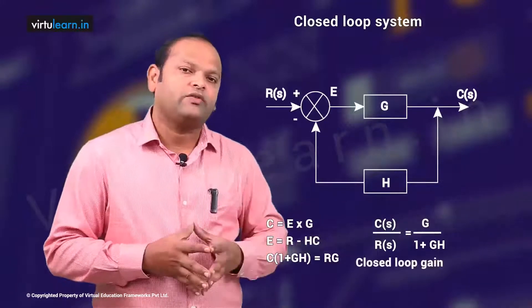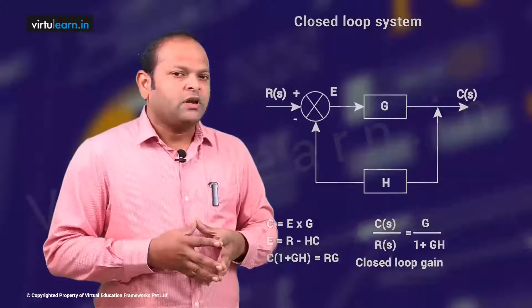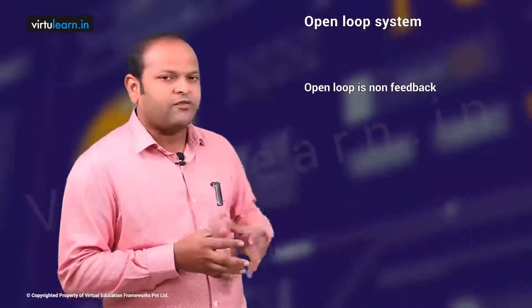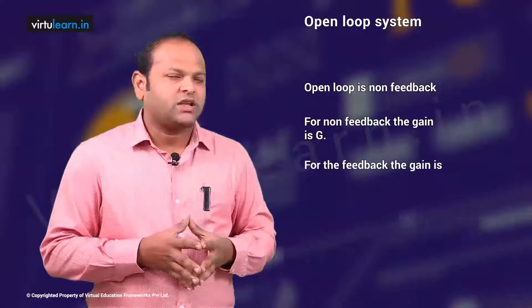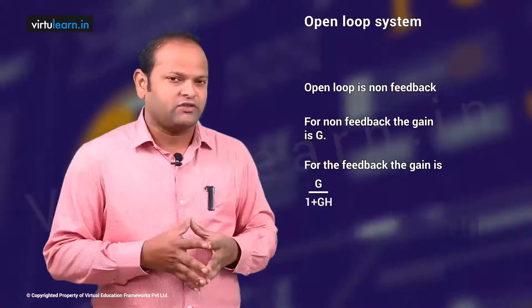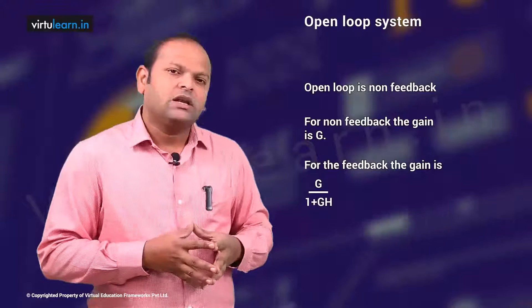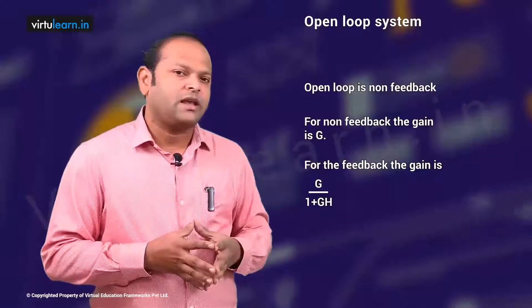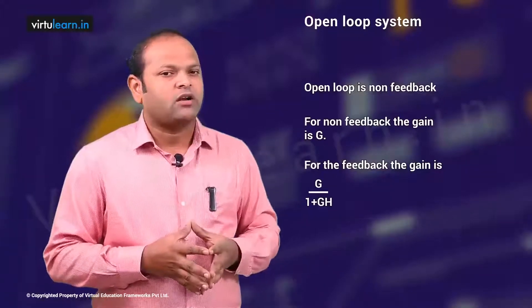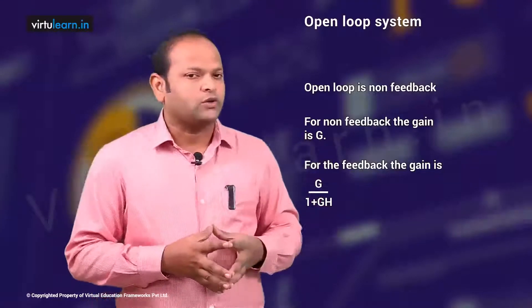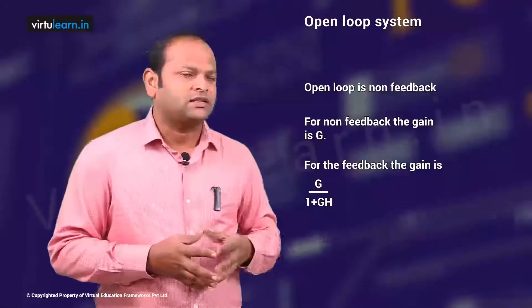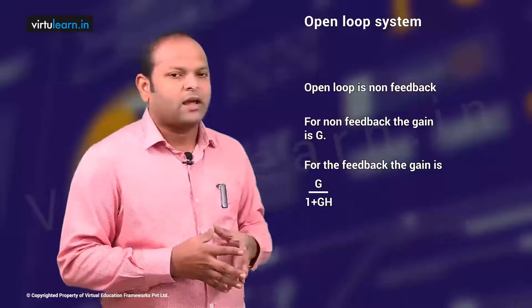For the non-feedback (open loop) system, the gain is G. For the feedback system, the gain is G/(1 + GH), which means for the feedback system the gain is reduced by the factor (1 + GH). So whenever you close the loop, the gain reduces — that is the result of feedback on gain. Now let us take the second effect: the effect of feedback on the location of poles or the time constant of the system.